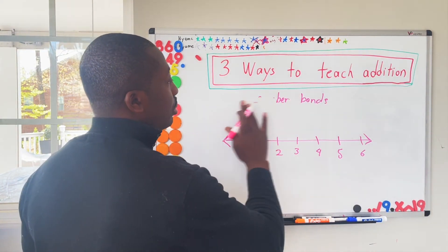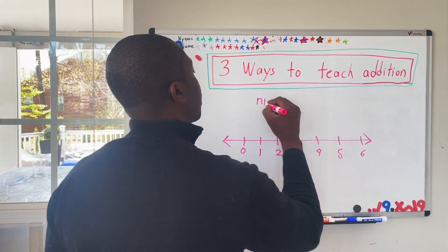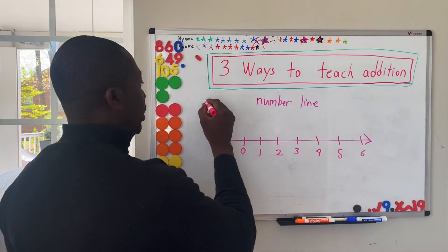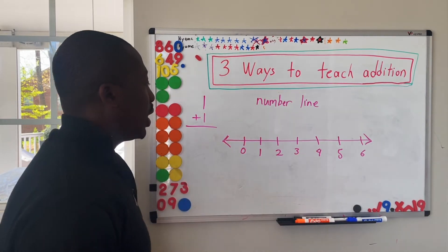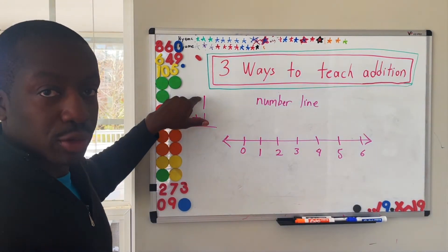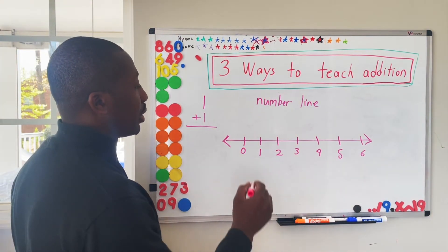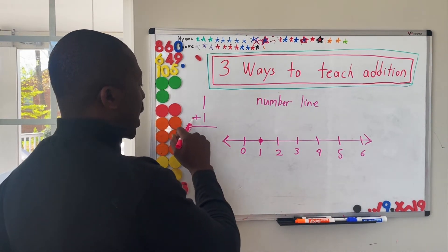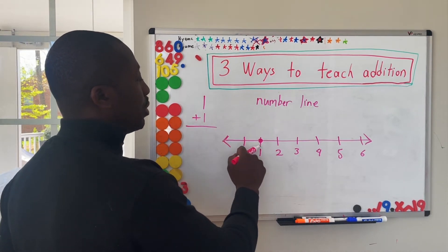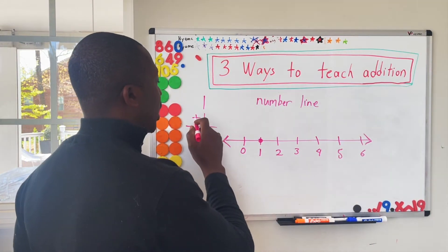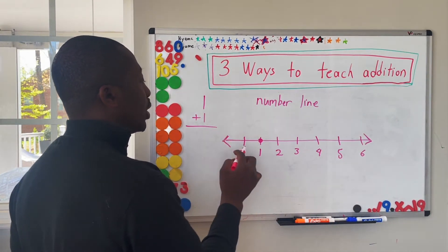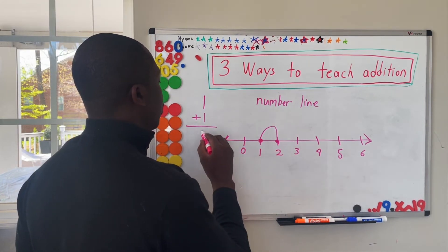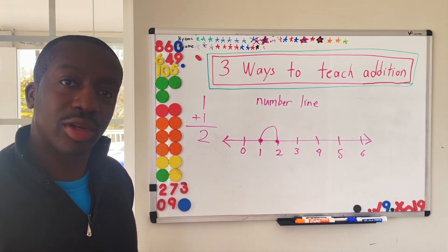And in that number line method, a child gets a problem like this one plus one. That child has to take the first number and identify it on the number line, which is here. Then they have to realize that since it's adding, you're going to be getting bigger and you're going to be getting bigger by the second number. So one plus one. So that means you're going to go over one and the answer equals two. That's the number line method.